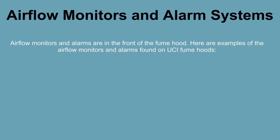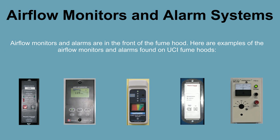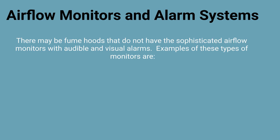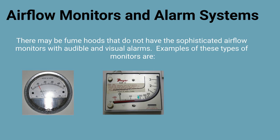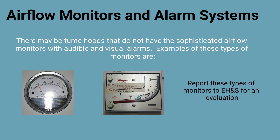Airflow monitors provide the fume hood user with important information concerning the airflow and face velocity. Monitors can and will alarm and alert the user when there is a problem with the airflow and face velocity. Below are examples of airflow monitors and alarms found on UCI fume hoods. There may be fume hoods on campus that do not have sophisticated airflow monitors with audible and visual alarms. Report these types of monitors to EH&S for an evaluation.